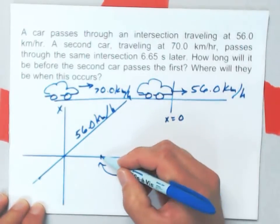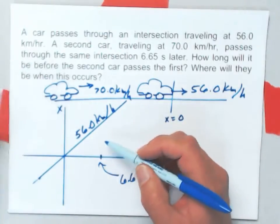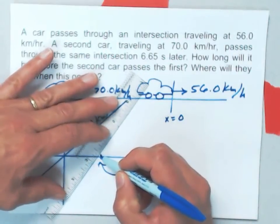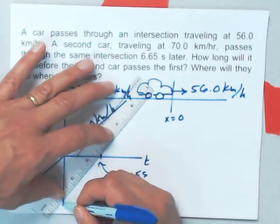That's when the second car passes through the intersection. And it's going faster, which means it has a steeper slope on its velocity curve. And I made my graph a little too crowded here.